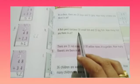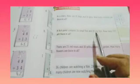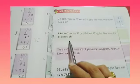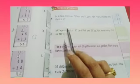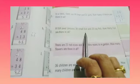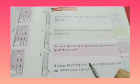Question number 2. A fish pond contains 16 small fish and 25 big fish. How many fish are there in all? In a fish pond, there are 16 small fish and 25 big fish. Now, we will find how many fish there are in total.